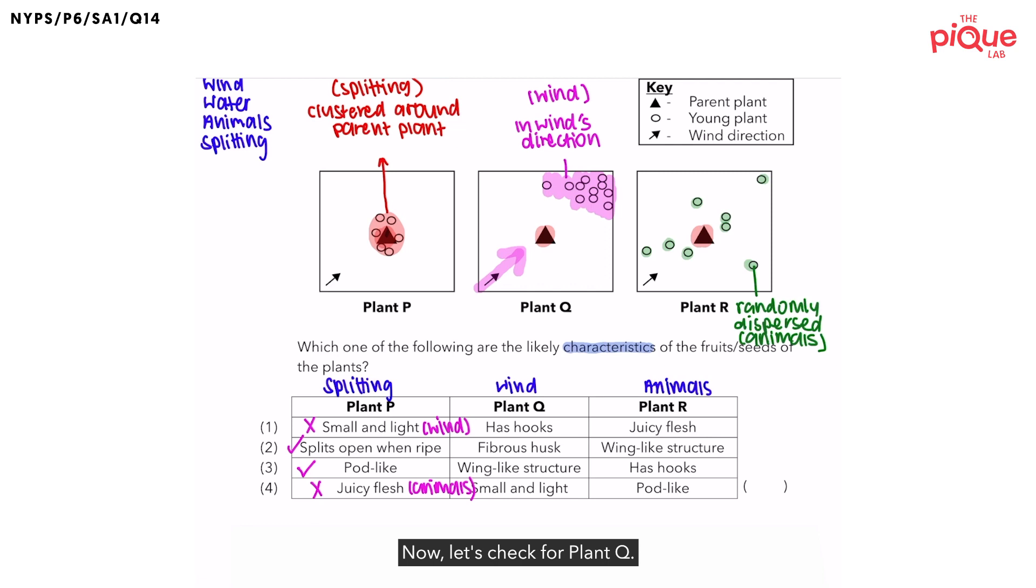Now, let's check for plant Q. If the fruit has hooks, it would allow the fruit to be attached to the outer covering of animals, which means that most likely they are dispersed by animals, not wind.